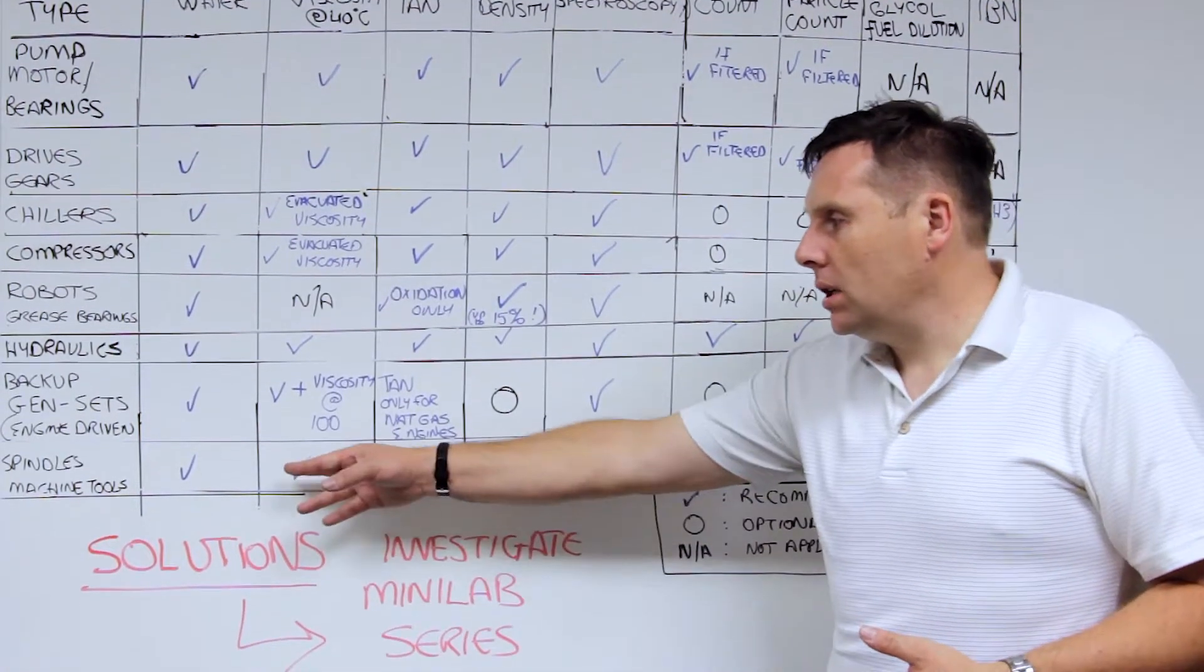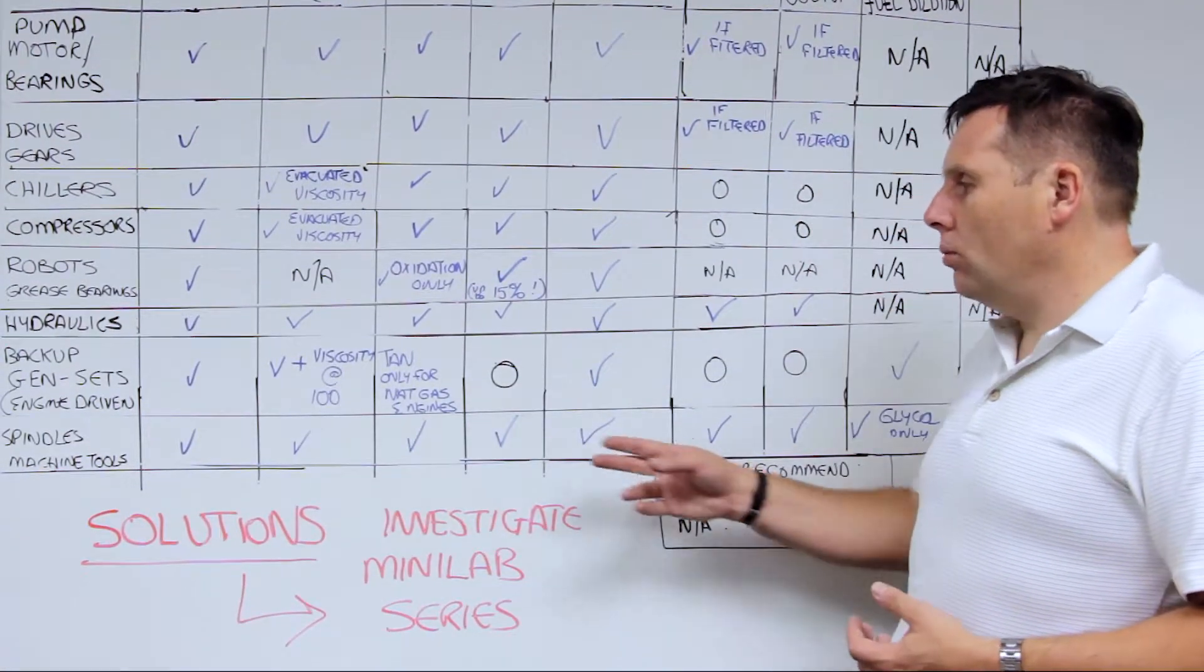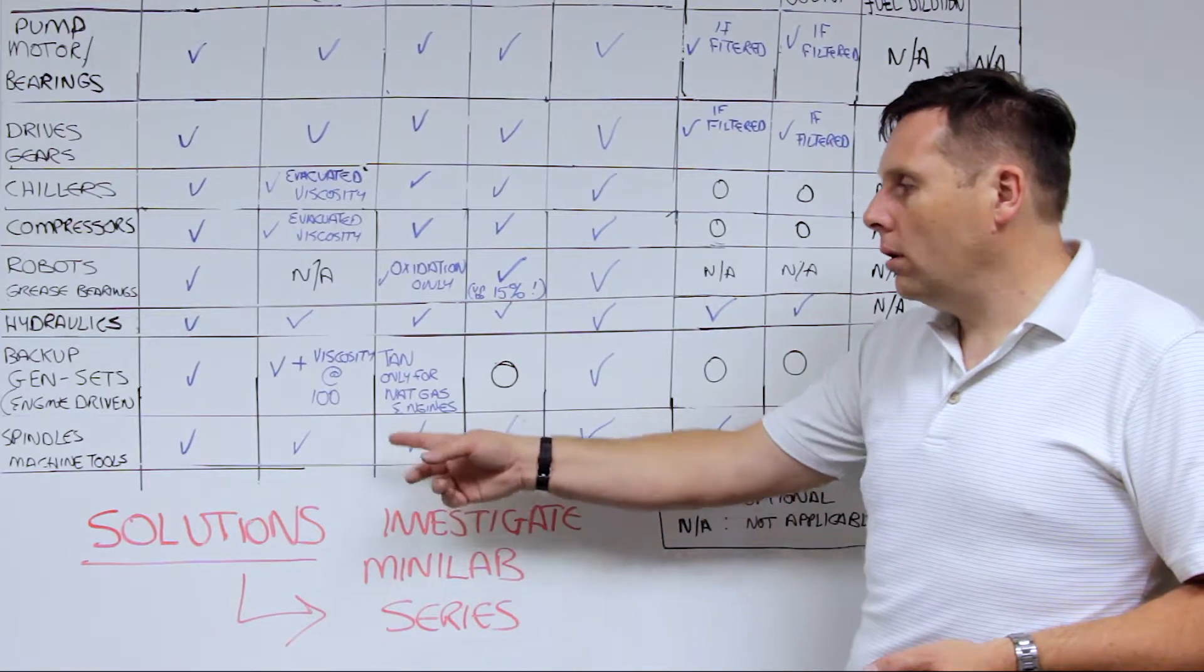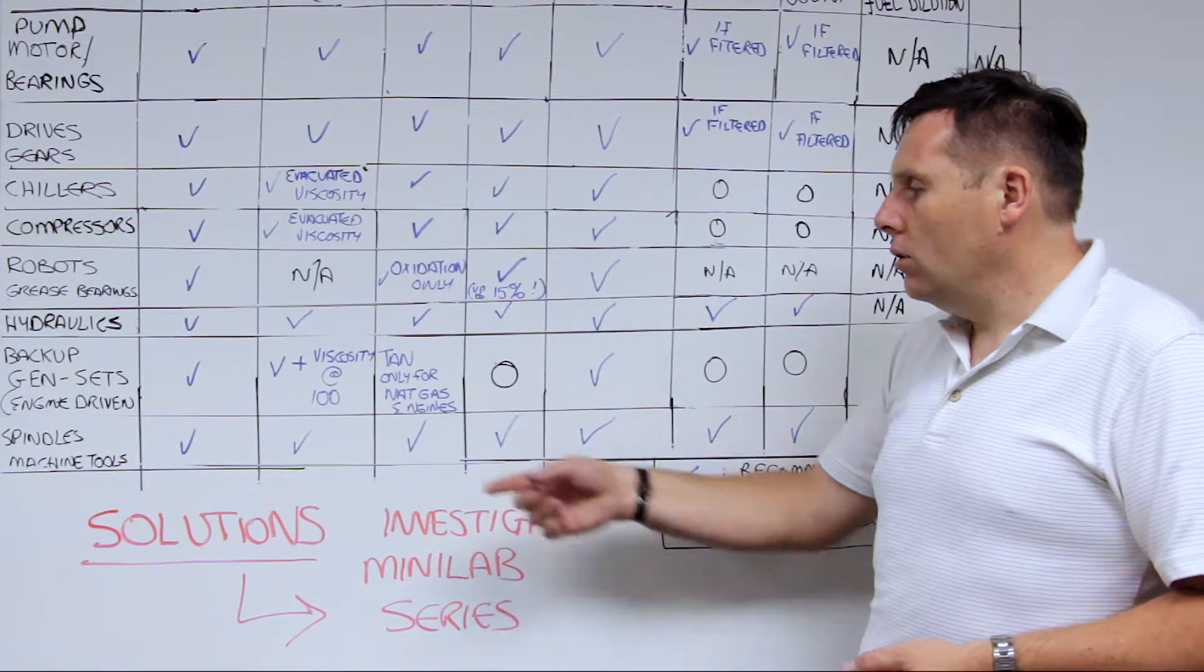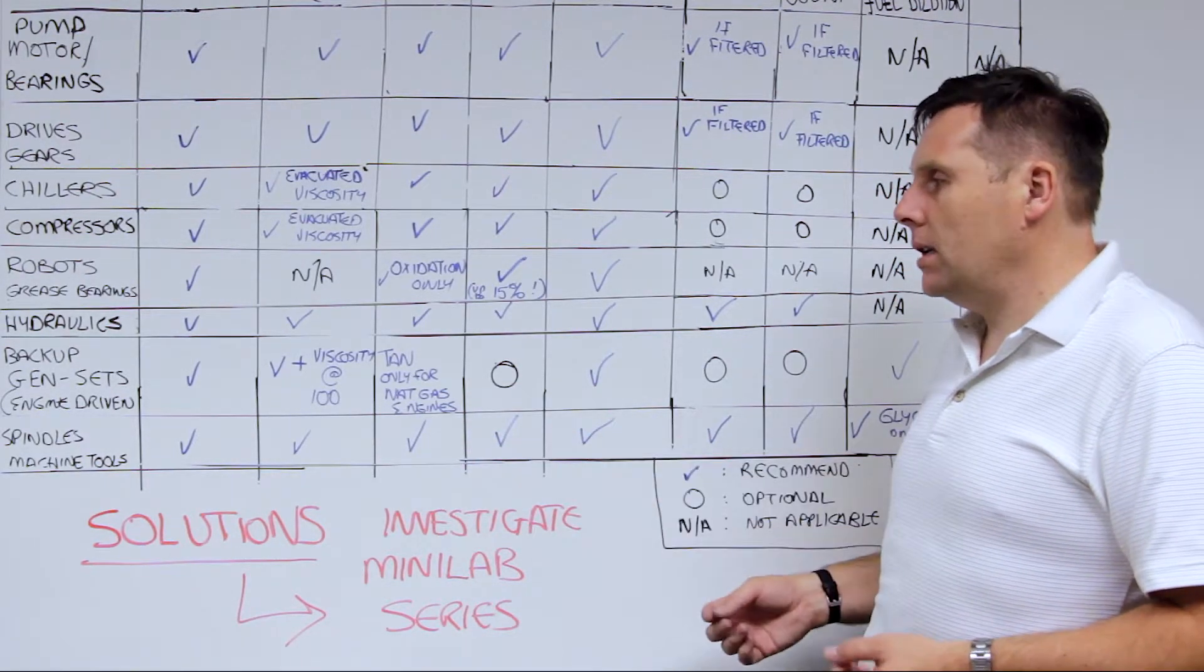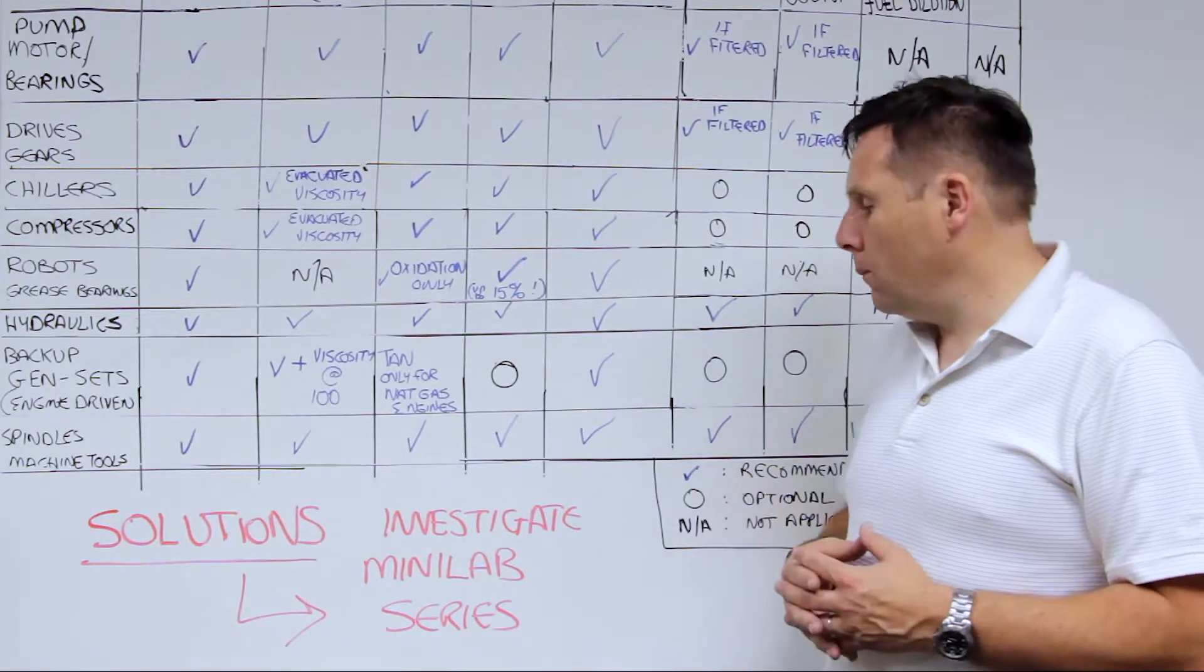Spindles, machine tools, things like that, you want to be looking at your most common types of tests, water, your viscosity, your oxidation readings, your ferrous density, because that's indicative of wear that's present in the system.